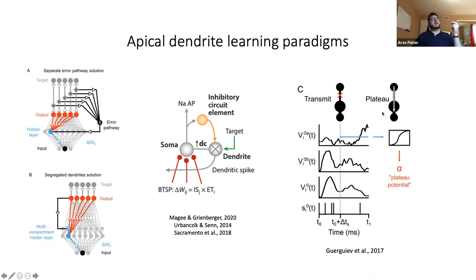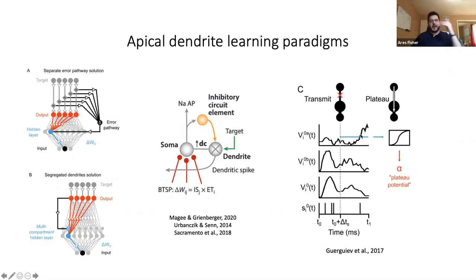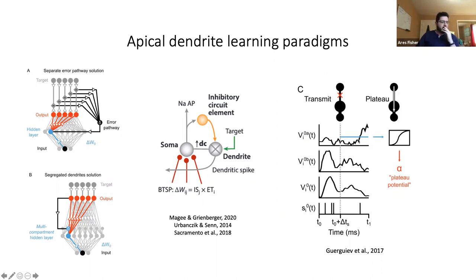The feedback creates the 'instruction signal' — it creates the instruction plateau: this is the plateau you should have if you were perfectly contributing to minimizing the error on this task. Because of their setup, they can differentiate this difference between the target plateau and the feedforward plateau, and they update the weights using backprop to match them. They also derive a sigmoidal function from averaging the plateau potential, which is what they use to differentiate.